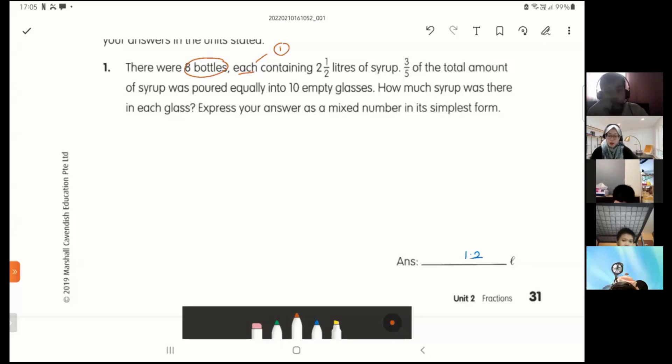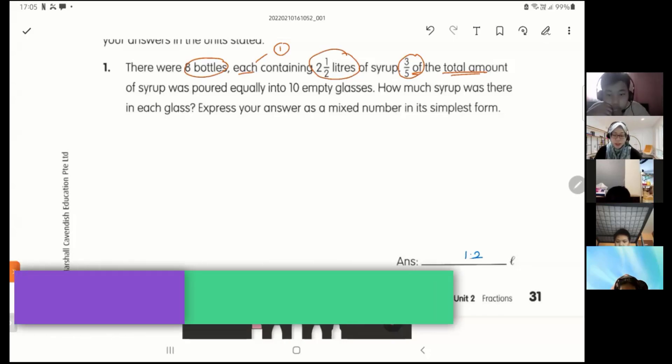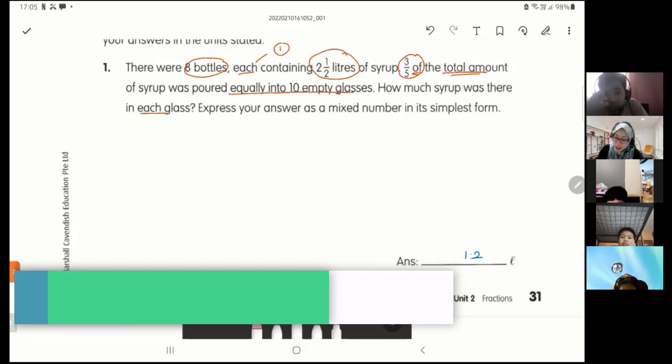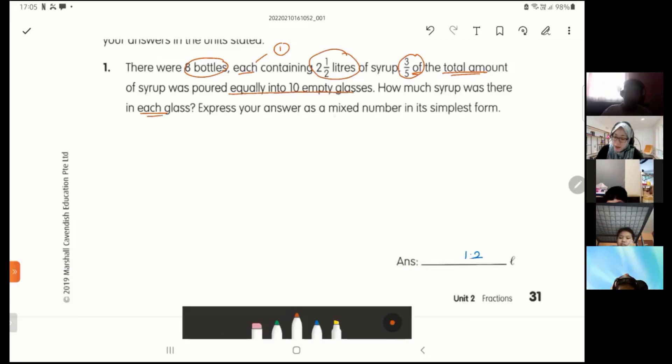Three over five of the total amount of syrup was poured equally into ten empty glasses. How much syrup was there in each glass?